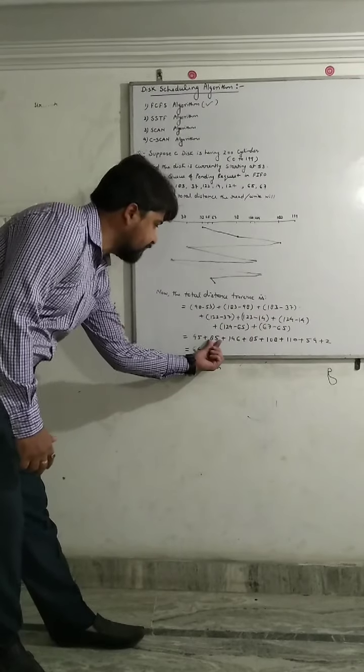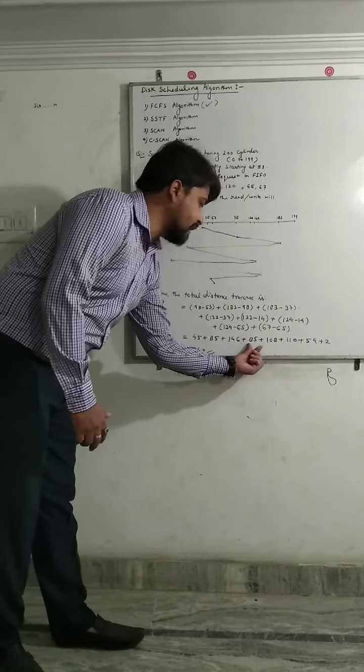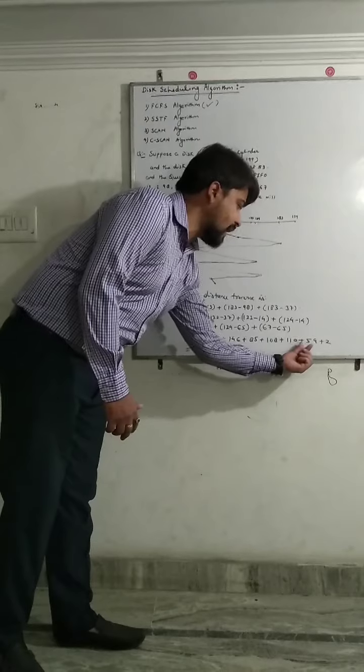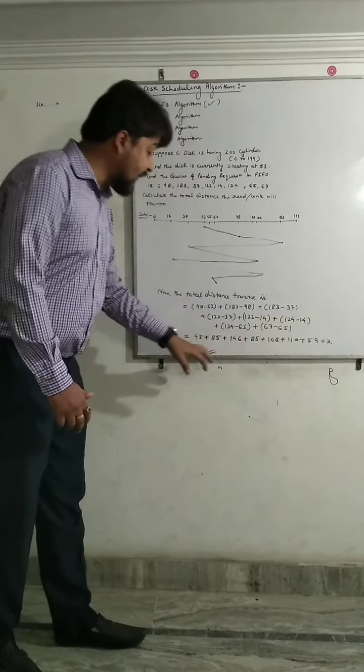The values are 45, 85, 146, 85, 108, 110, 59, and 2. When we add everything together,